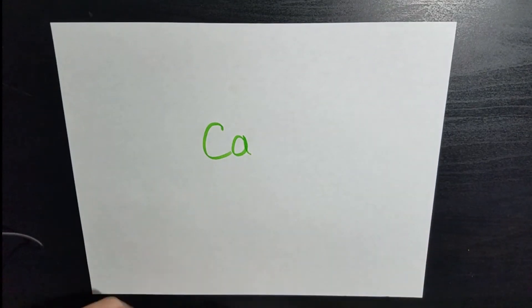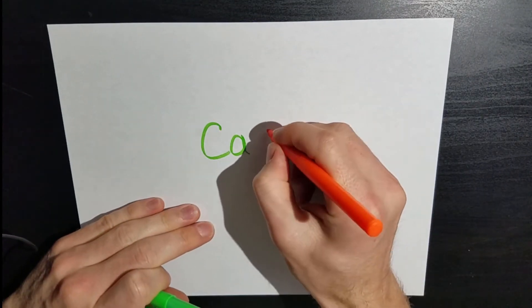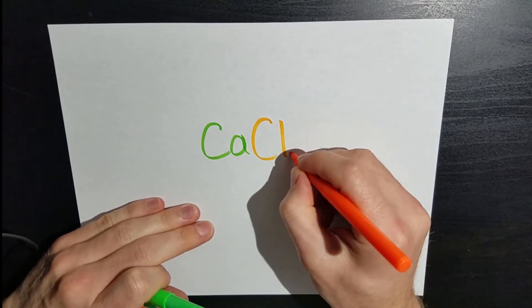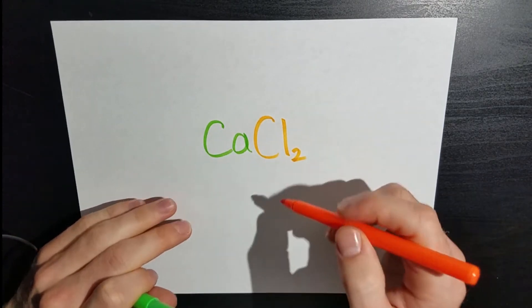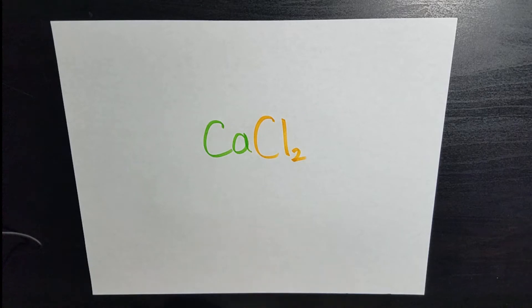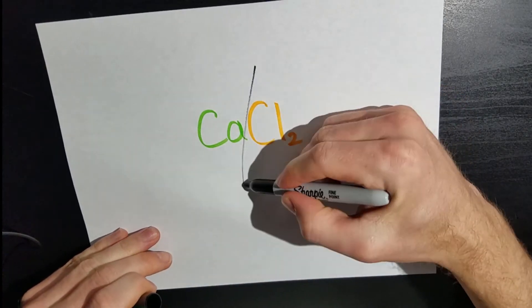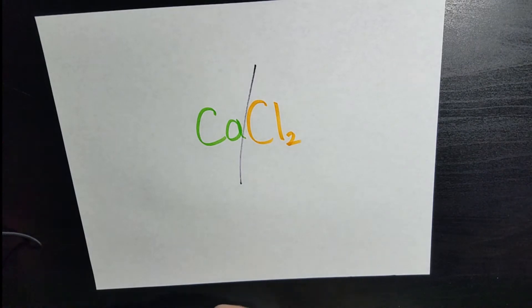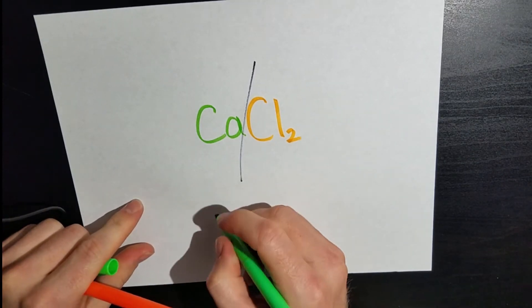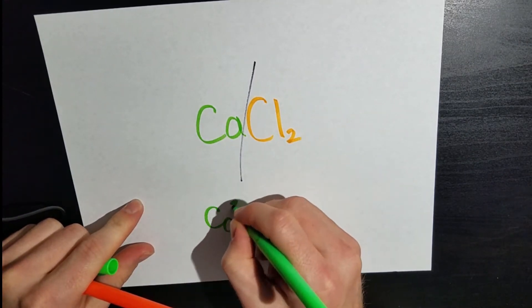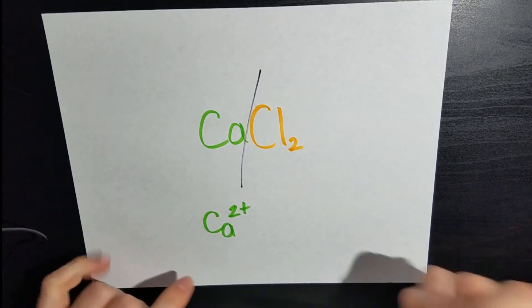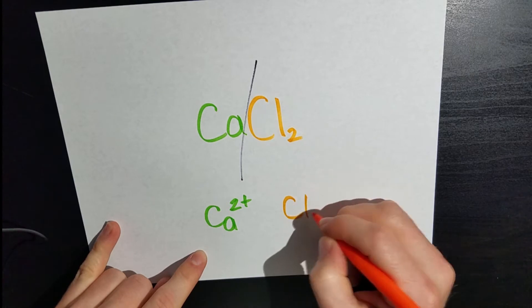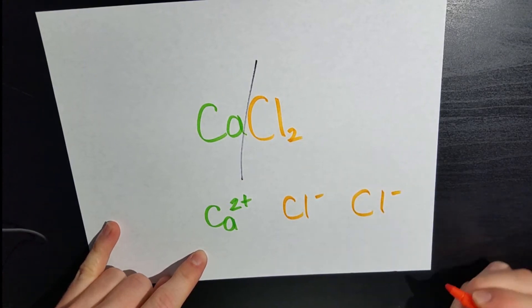You've got your calcium molecule and then you've got chloride with it, and you actually have two of those. So that's our calcium chloride together, and that's when it's a crystal. And then remember that if you were to put it in water, then you would actually get those two to separate out. So you'd end up having a calcium with a 2 plus charge and a chloride with a negative charge, and then one more chloride with a negative charge.